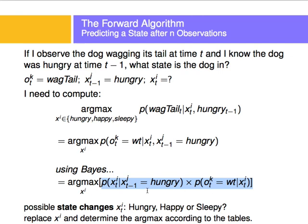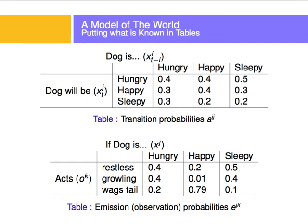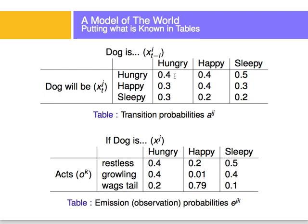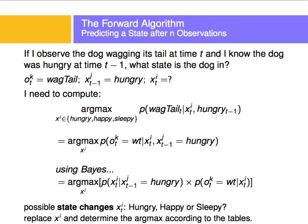For example, trying x equals hungry: the probability of hungry given hungry is 0.4, and the probability of wagging tail given hungry is 0.2. Multiply those two to get the probability that the current state is hungry. You do the same for happy and for sleepy, and the x with the biggest probability is the one you pick. That's how you predict what state the dog is in if you have all these probability tables collected from experience.